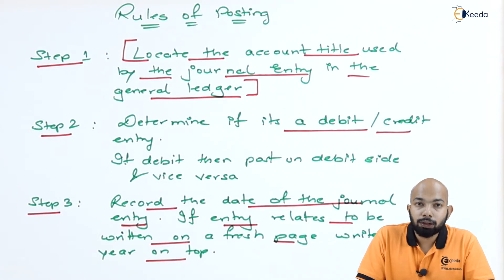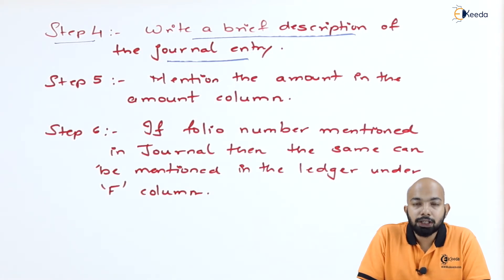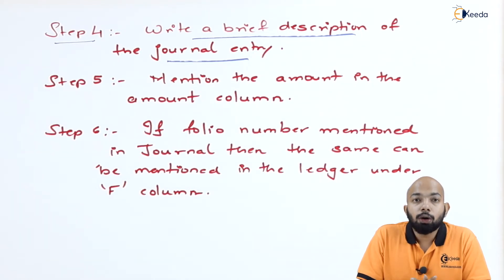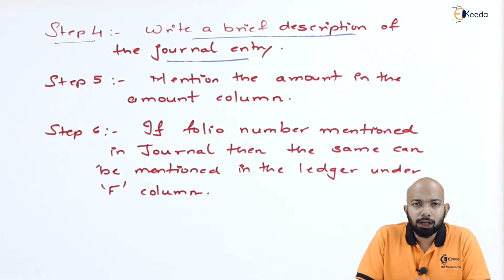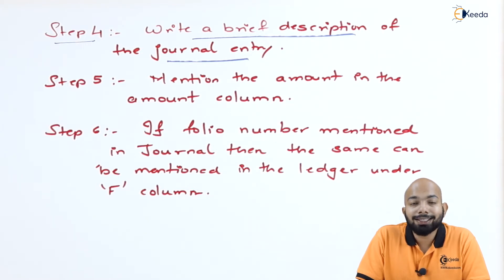Step four refers to writing down a brief description or explanation about the transaction being referred to. Just as we write narrations below every journal entry, we have to mention a brief explanation under the explanation column in the ledger. It is just a small line which gives you a description about what kind of transaction it is.